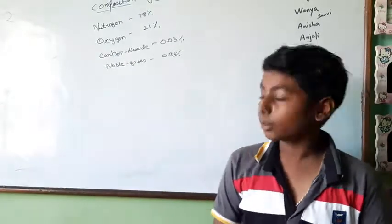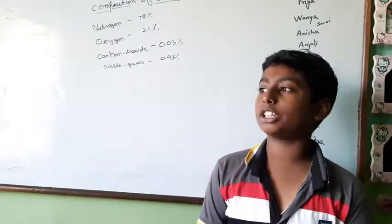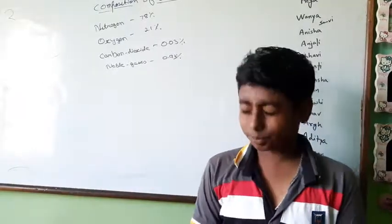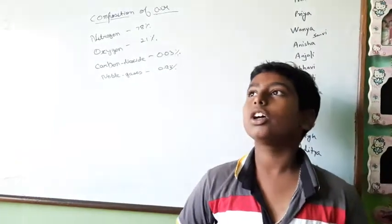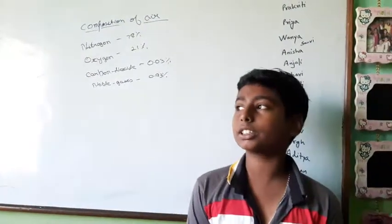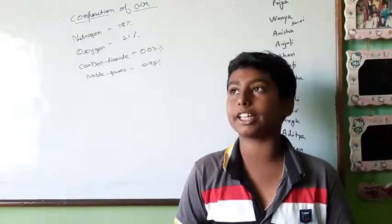Second, oxygen. The average of oxygen in the atmosphere is 21%. Oxygen is useful air because all living things breathe oxygen except plants. Oxygen is the waste material of plants.